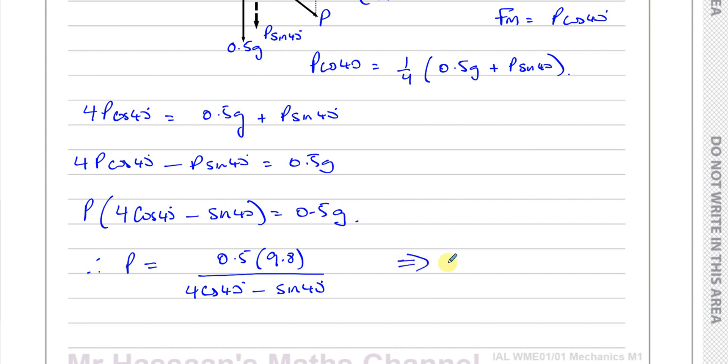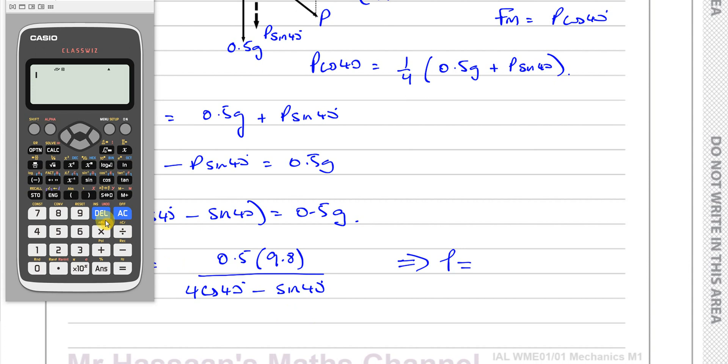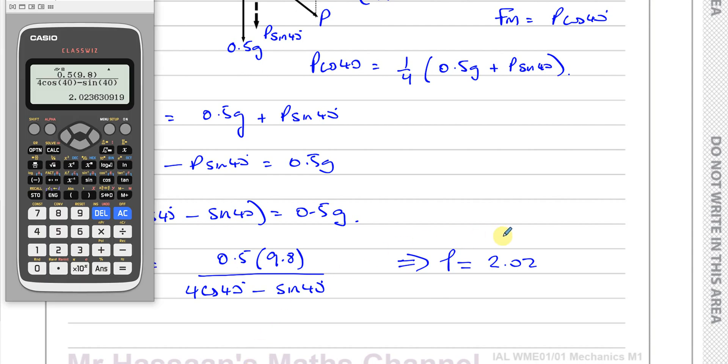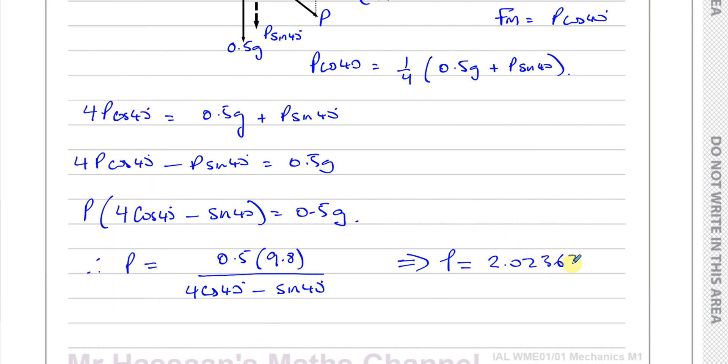So we can say that P is equal to, let me stick this in our calculator. We have 0.5 times 9.8 divided by 4 cosine 40 minus sine of 40. And that gives us 2.02363.